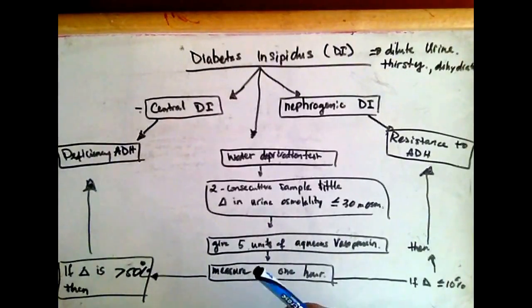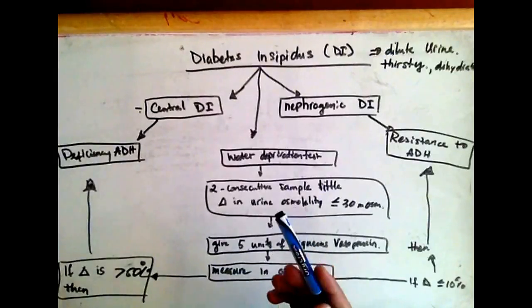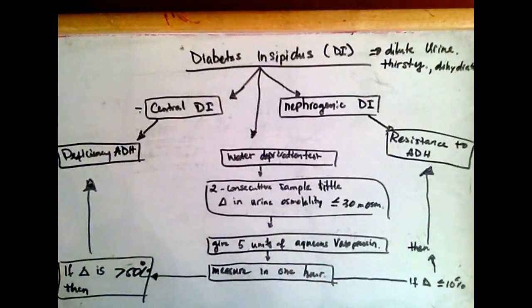Without ADH, the kidney's collecting duct cells are impermeable to water, causing water to be lost from the body via urine. When ADH is present, however, water is free to osmotically move across the collecting duct cells.